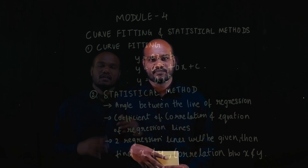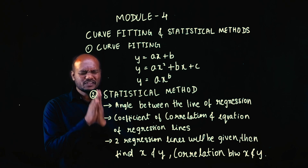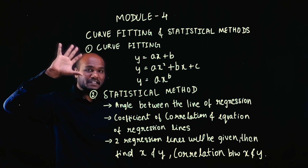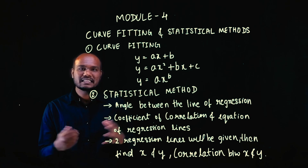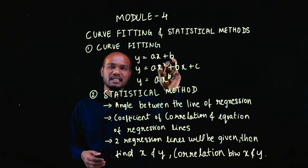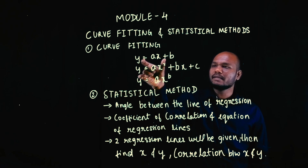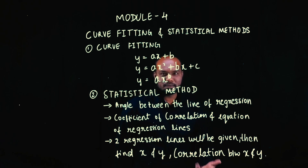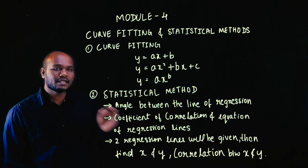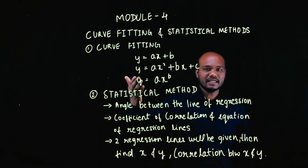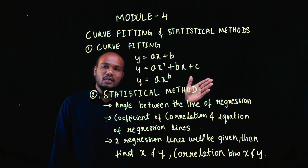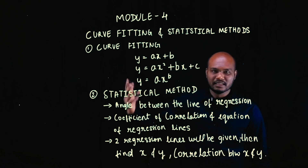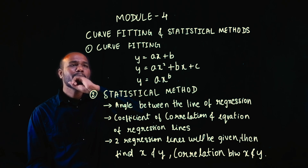The next module you need to learn is module number 4. This is one of the easiest modules in M4, covering curve fitting and statistical methods. In curve fitting, they ask you to fit a curve — it may be y = ax + b (a line), a parabola, or an exponential function. All you need to do is find the variables a, b, or c. You will be given a tabular column with x and y values, and you generate two equations for two unknowns or three equations for three unknowns. This is one of the simplest topics.